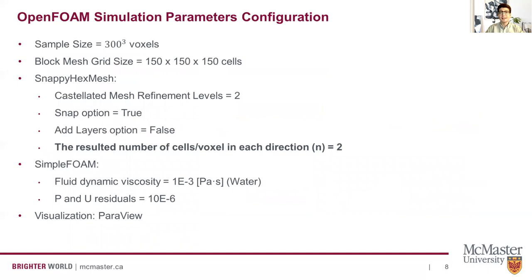Here are the simulation parameters configuration used in OpenFOAM. We used a block mesh grid size of 150×150×150 and two castellated mesh refinement levels. This means that every block mesh grid cell will be split into two cells in every direction for two iterations. With this mesh parameters configuration, the resulting number of cells per sample voxel in each direction — referred to here as n — will be equal to 2. For the OpenFOAM solver, we used a dynamic viscosity corresponding to water, and a residual limit of 10⁻⁶ for pressure and velocity.